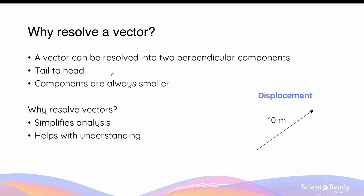In physics, a vector can be resolved into two perpendicular components. This is done by joining the tail of a vector to the head of the vector using two perpendicular vectors, such that the angle between the two vectors forms a right angle. When resolving a vector into its perpendicular components, it is useful to keep in mind that the components should always be smaller than the original vector itself.